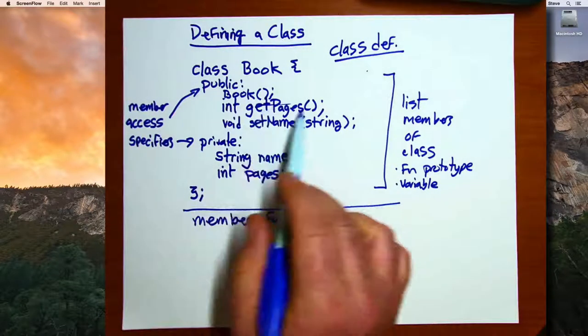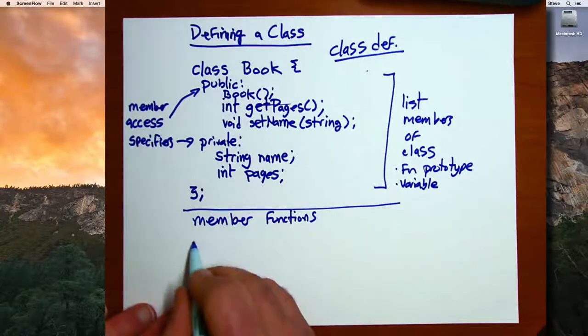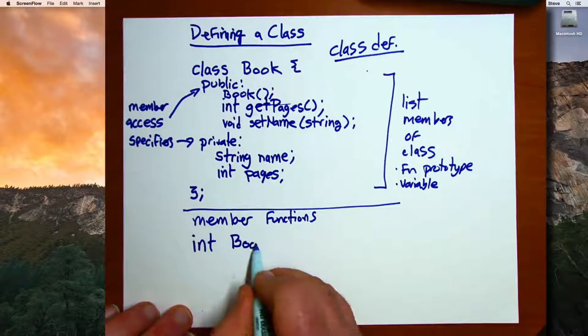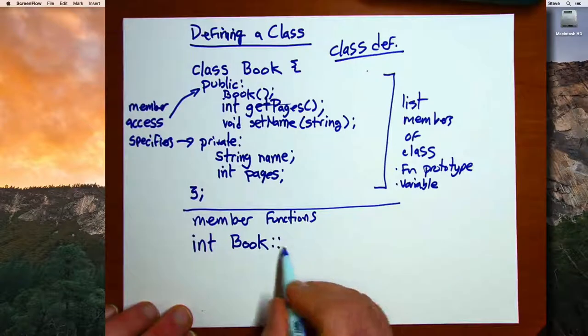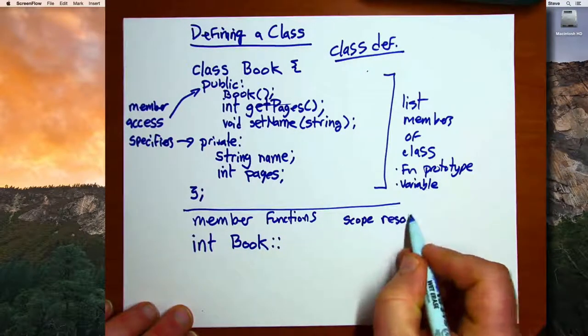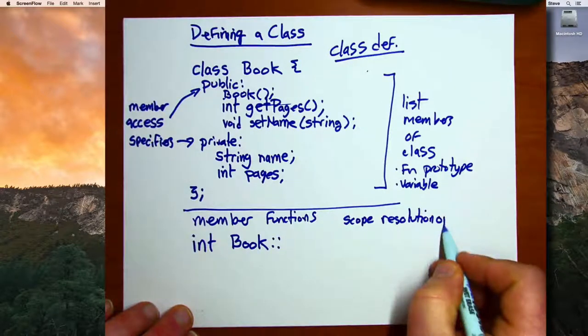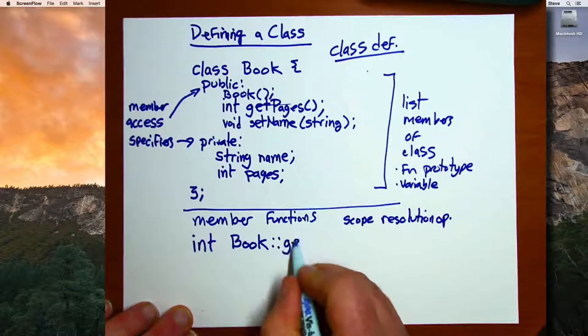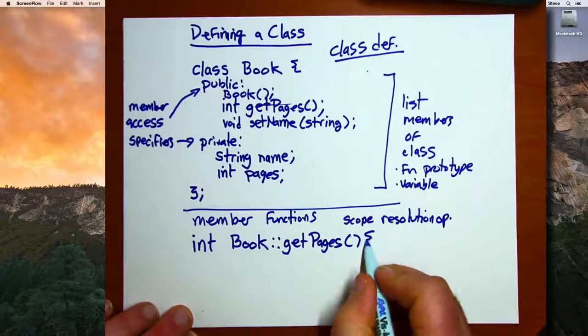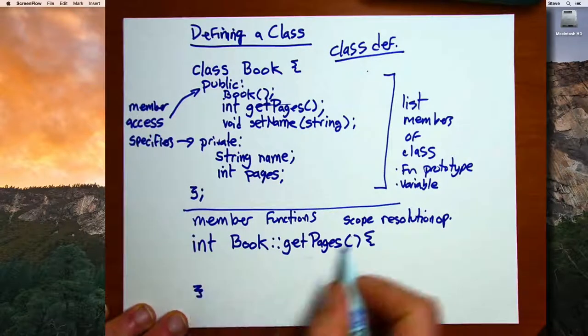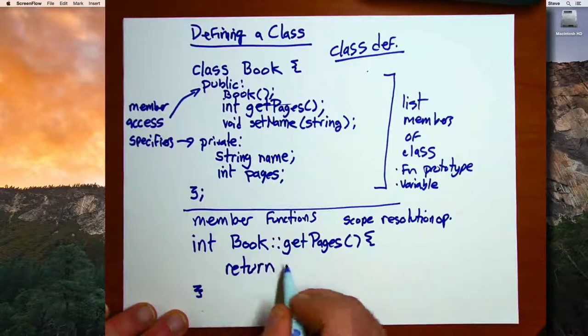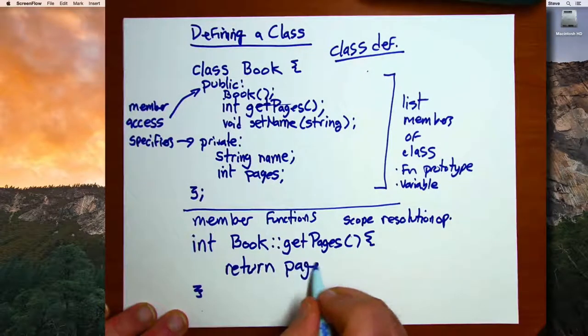So the member functions are coded with this syntax. Let's code this one here, getPages. So first, we're going to put the return type, then the name of the class, then two colons together. That's the scope resolution operator, then the name of the function, and then our parameters, if any, and our opening and closing braces that we see on every function. And then the code for that function. In this case, it would just say return pages.